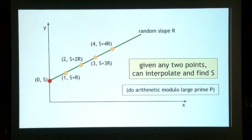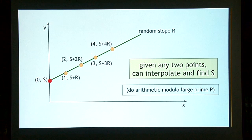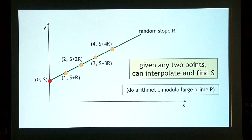If you do this arithmetic modulo a large prime p, you can prove that any two points are sufficient to interpolate and find S, and fewer than two points don't tell you anything about S. This gives us n equals any value and k equals 2.